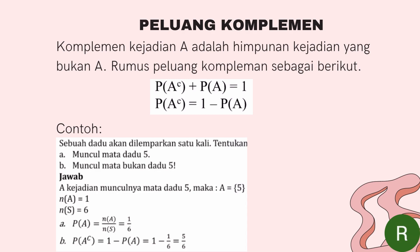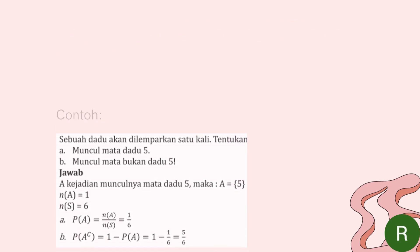Selanjutnya menentukan muncul mata dadu bukan lima. Di sini ada kata-kata 'bukan', maka kita harus menggunakan rumus peluang komplemen, yaitu P(A^C) sama dengan 1 dikurangi P(A). P(A) tadi kita sudah mendapatkan 1 per 6, jadi langsung dimasukkan: 1 dikurangi 1 per 6 yaitu 5 per 6.